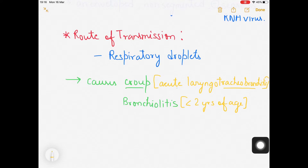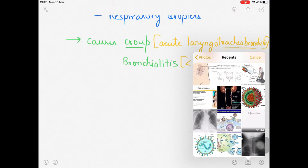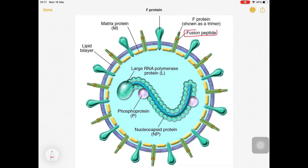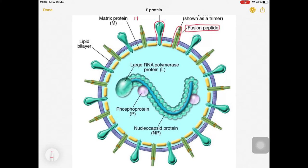This virus damages the lungs and causes upper respiratory tract infections. Looking at its structure, it has a fusion peptide — the spikes on the surface — and an HN tetramer, which stands for hemagglutinin and neuraminidase. Both influenza and para-influenza are enveloped, covered by a lipid bilayer envelope.